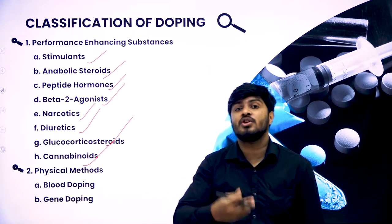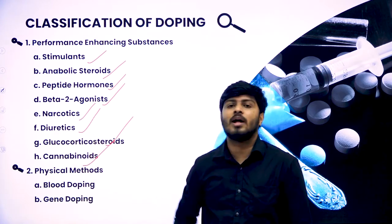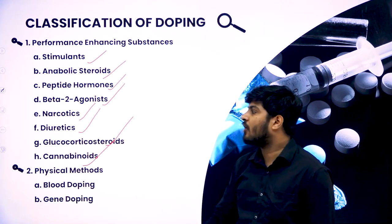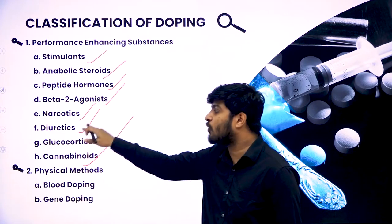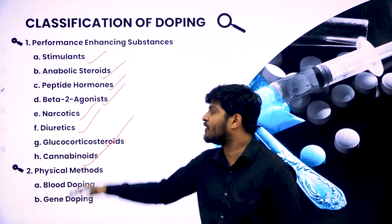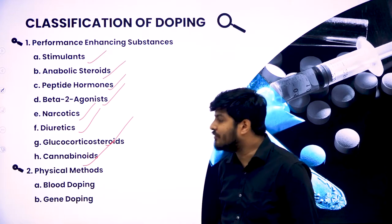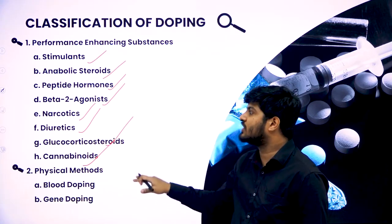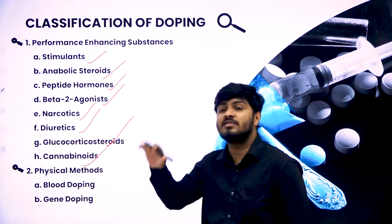Then you have narcotics, where the suppression of pain occurs. In simpler terms, we can call narcotics more like pain-suppressing medicine — like ibuprofen and painkillers. Then you have diuretics, which is not exactly performance-enhancing but more like a weight-reduction drug, where the amount of water in the body gets reduced when you consume this, helping a person reduce weight faster in an unnatural way. Next you have glucocorticosteroids, which again provide relief from muscles — both glucocorticosteroids and narcotics suppress pain and give relaxation to the body.